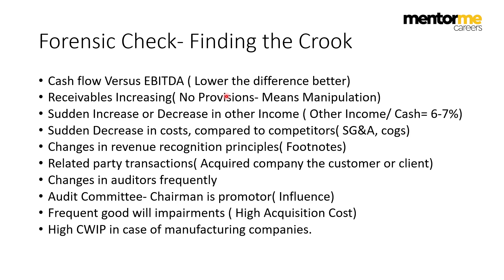The third check is a sudden increase or decrease in other income. We do not expect a company to generate a lot of money from secondary sources — if Titan is in the business of selling jewelry, we expect the majority of revenue to come from jewelry. Other income divided by total cash and cash equivalents should be around 6–7% in India, or 2–3% in the US. Any number lower than 6–7% in India means the cash is likely not actually there, since even a basic fixed deposit would generate that return.